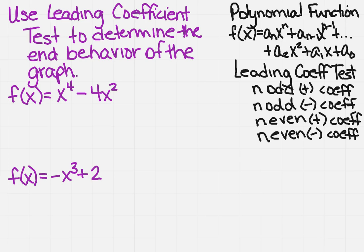So what we want to do is let's look at the first one. I've got x to the fourth minus 4x squared. So the first thing I want to find out is what is n? Well n is this exponent right here. And what do I notice? I notice it's a 4.